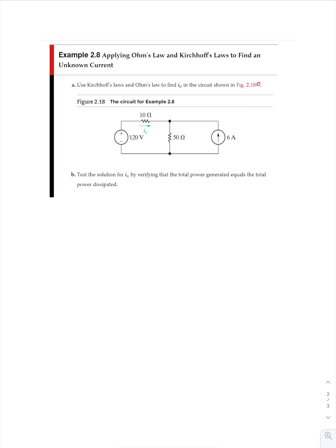Kirchhoff's voltage law states that the sum of voltages in a loop is equal to zero. So we have in this example two loops — loop one, and we call this current I sub one, and loop two. So let's perform Kirchhoff's voltage law for loop one.